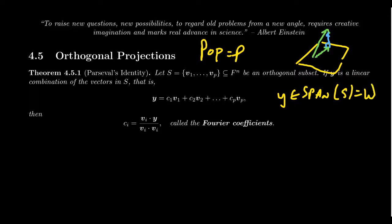And so that's our subspace W in consideration right here. So what Parseval's identity says is that because the spanning set here is orthogonal, we can actually compute the coefficients using dot products or Hermitian products. The coefficients are going to look like VI dot Y over VI dot VI. And these are commonly referred to as the Fourier coefficients of this combination.